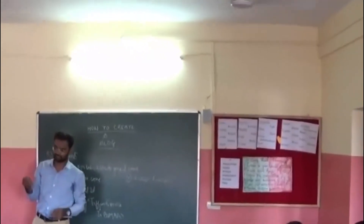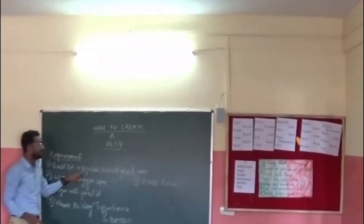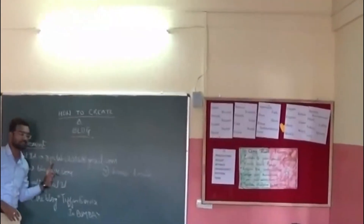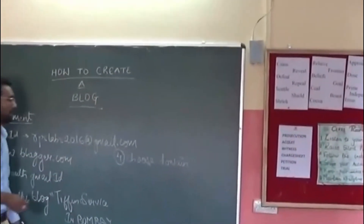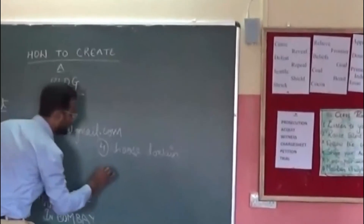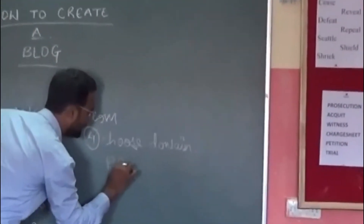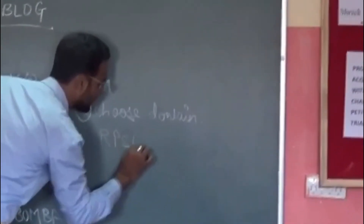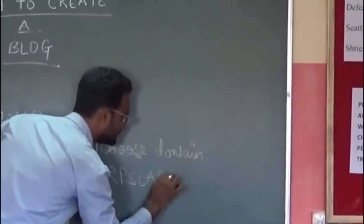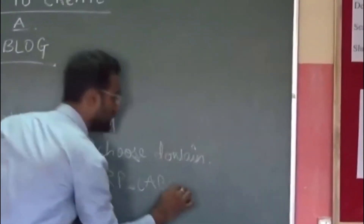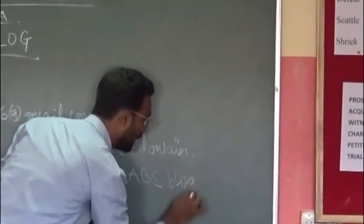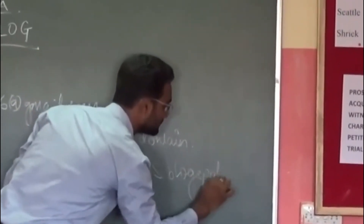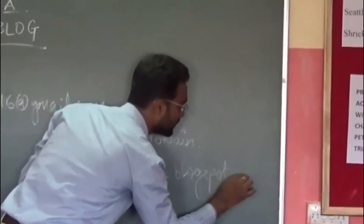Let's take an example. My email ID is RPSLabs2016. I made a blog named as RPSLabs dot com.